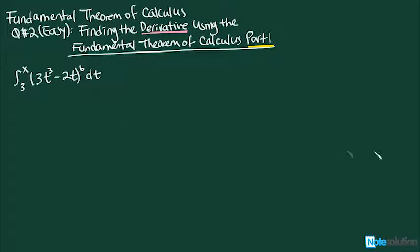What does it mean to take the derivative using the fundamental theorem of calculus part one? The question will say some kind of function equals this integral expression, and notice it's going from 3 to x. Part one said that the lower bound was some kind of number and the upper bound was a variable.